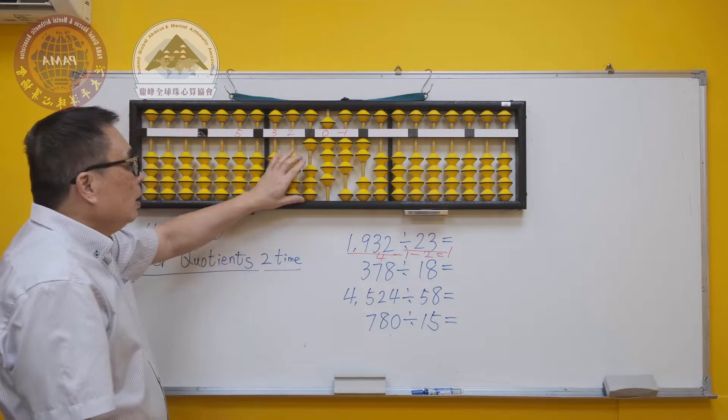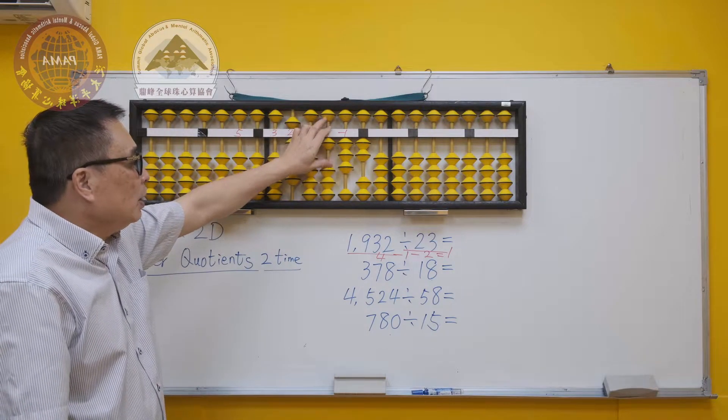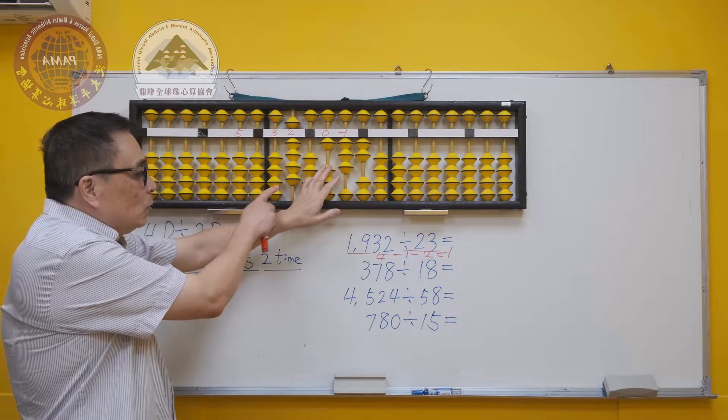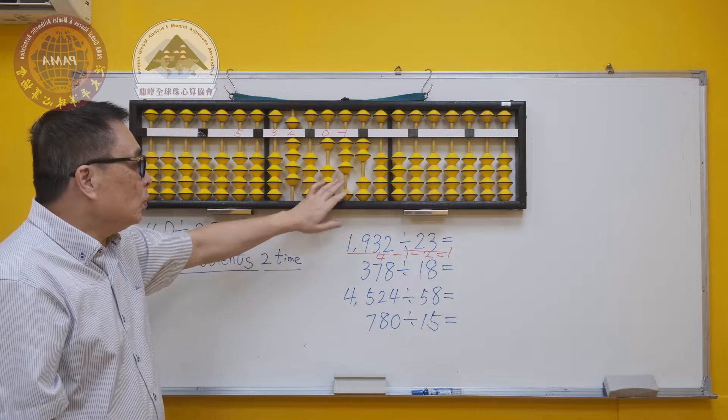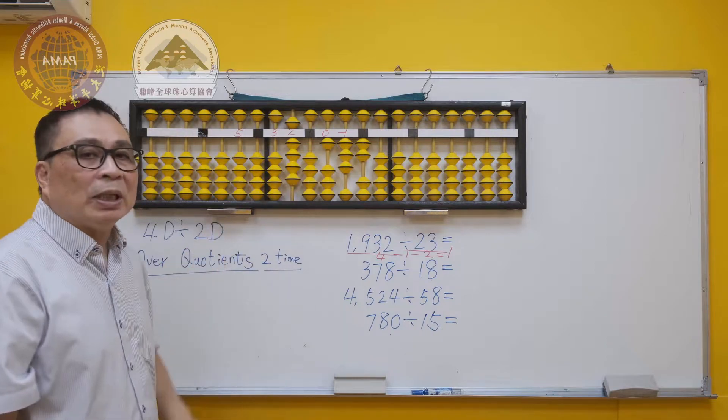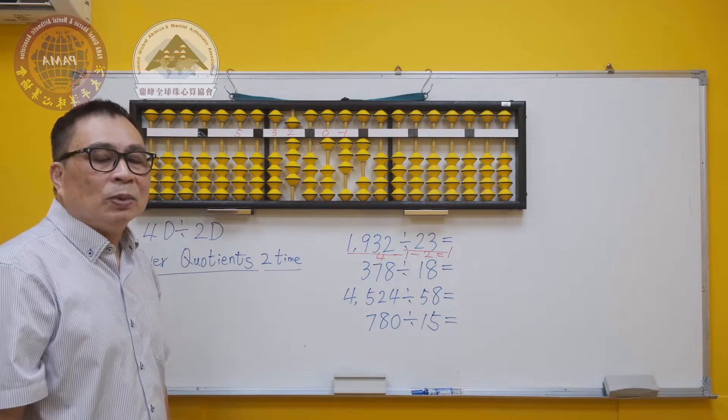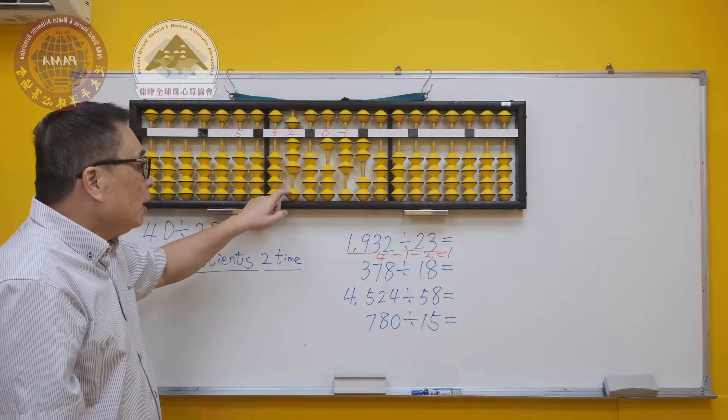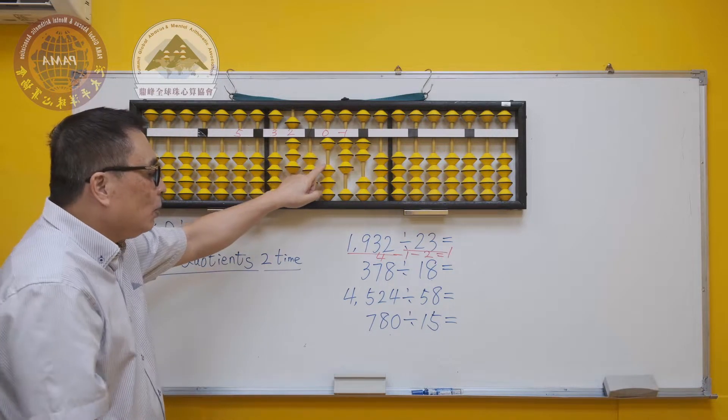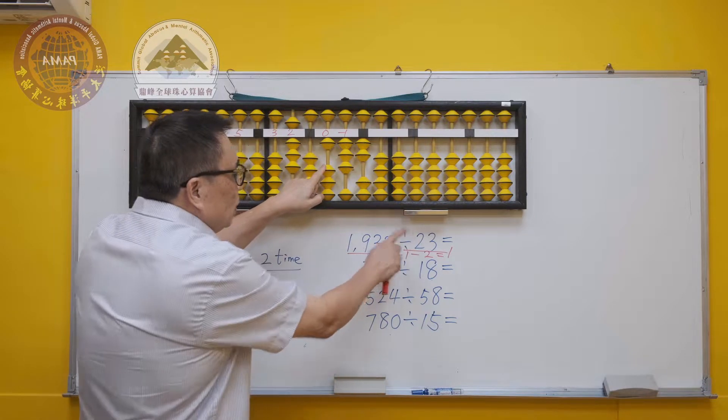2 times 9 is 18. Then we use the answer 9 to times 3, which is 27. However, 27 is not enough to minus here. Therefore, we minus 1 time from the answer, skip 1 rod, and return the first digit of the divisor, which is 2.